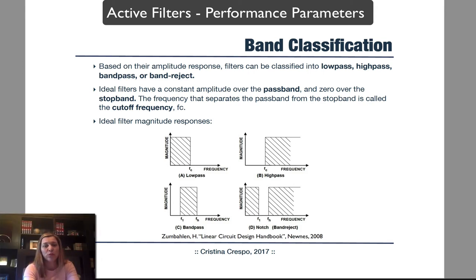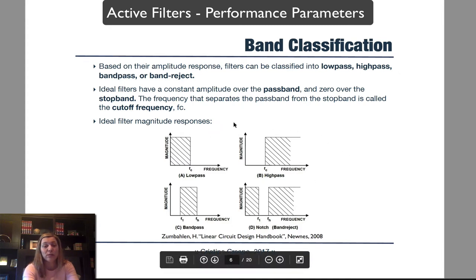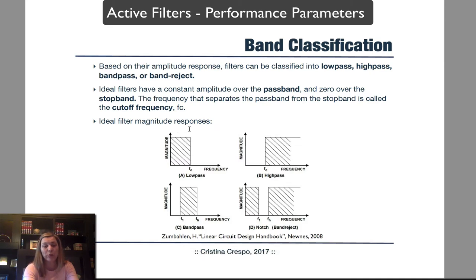In the previous video, we were talking about how filters can be classified based on the amplitude portion of their frequency response. They can be classified as low-pass, high-pass, band-pass, or band-reject, also known as notch filters. The block-type responses with a perfectly flat passband and a very sharp distinction between the passband and the stopband — these are ideal filter responses.